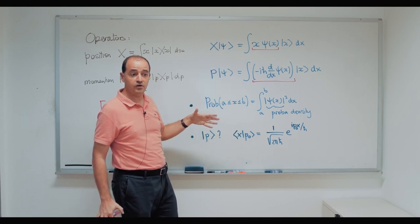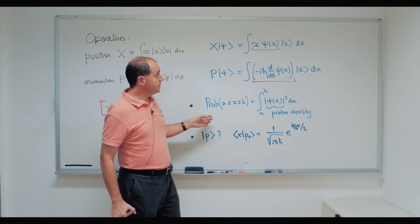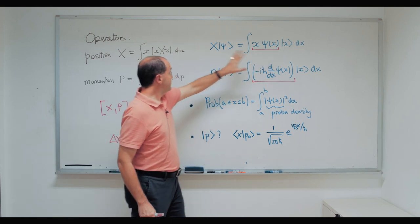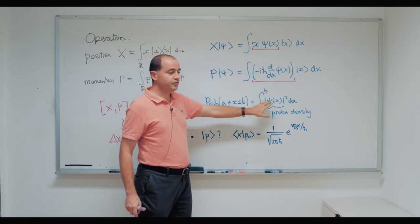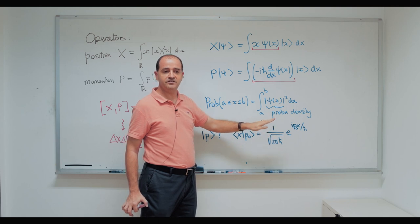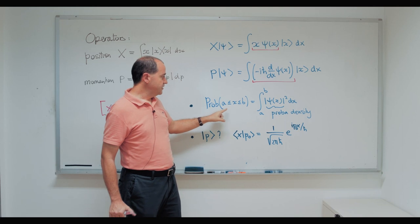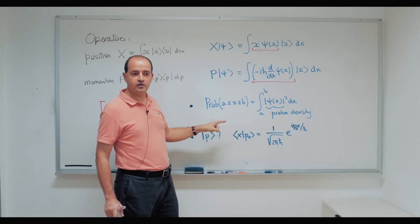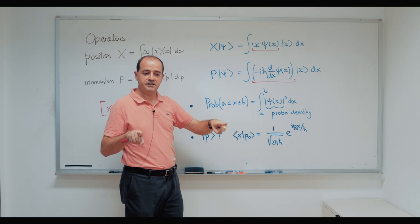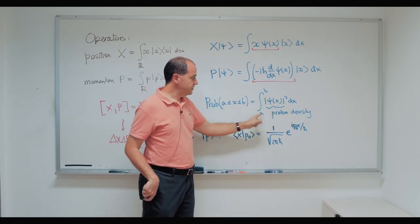Two important things to highlight: first, |ψ(x)|² plays the role of a probability density — it is the density of probability of finding the particle at position x. This means that the probability of finding the particle between position a and position b is the integral of |ψ(x)|² dx between a and b.